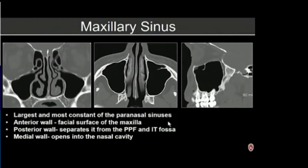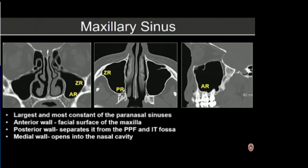The maxillary sinus is the largest and most constant of the paranasal sinuses. The anterior wall forms the anterior surface of the maxilla; the posterior wall is separated from the infratemporal fossa laterally and the pterygopalatine fossa medially; and the medial wall opens into the nasal cavity. Named recesses include the alveolar recess inferiorly, the zygomatic recess laterally and superiorly, and the palatine recess posteriorly.